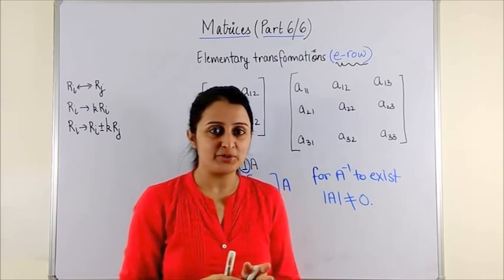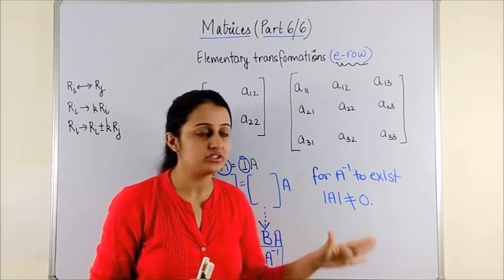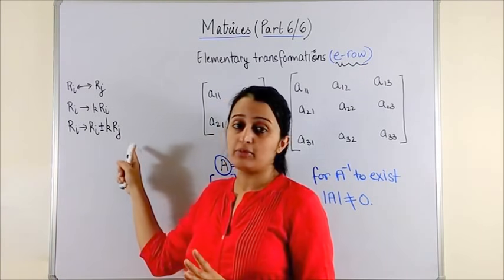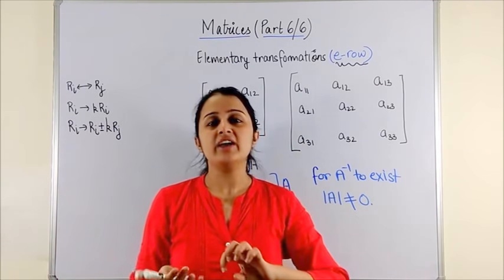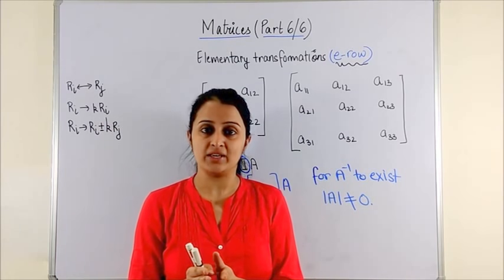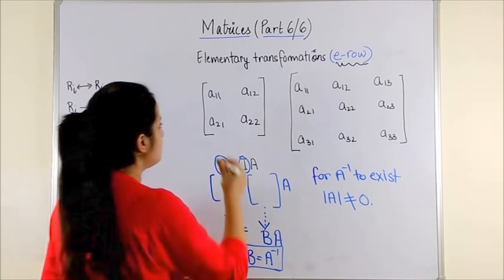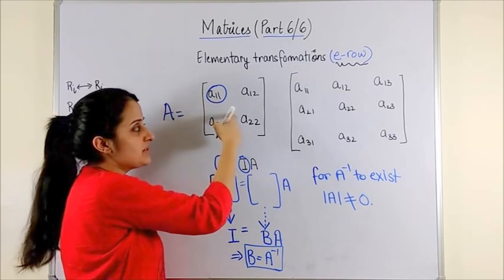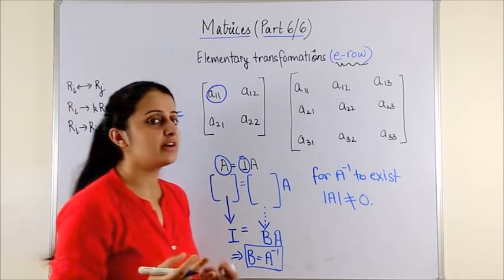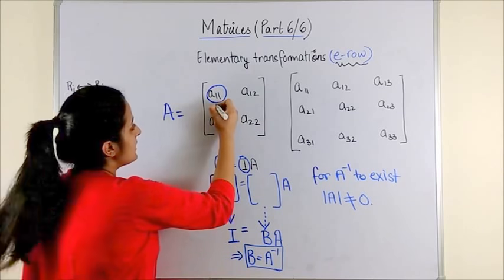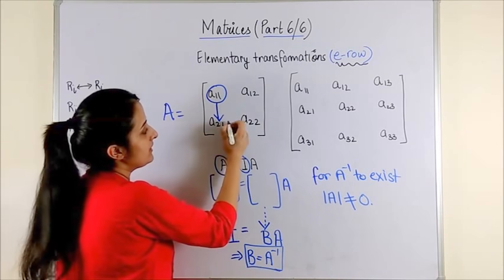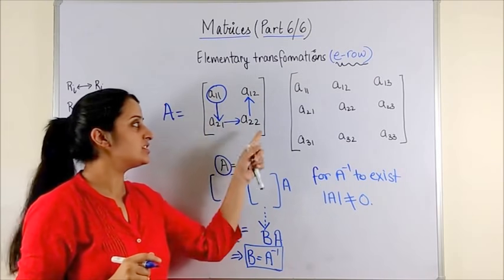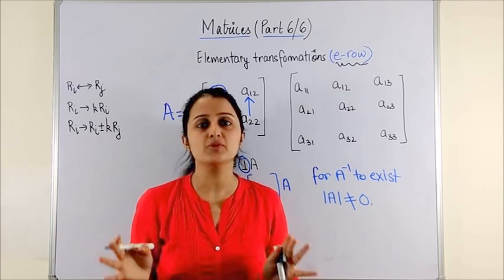Now I'm revealing the secret of how to make this conversion for a 2x2 matrix and a 3x3 matrix. Note these are the three valid operations you can apply, but the format in which you apply them is very important. We are going to follow a pattern. First, ensure that A11 equals 1 because you are converting to an identity matrix. Then target A21, then A12. Following this pattern makes the procedure almost mechanical.